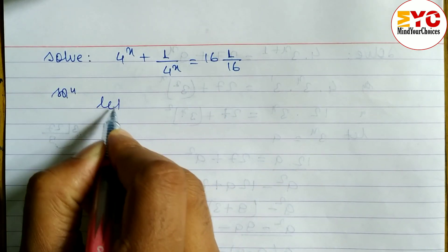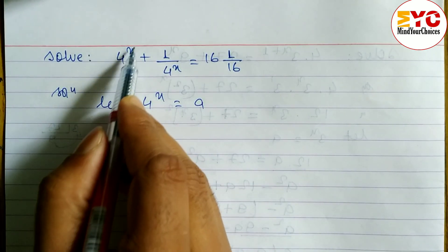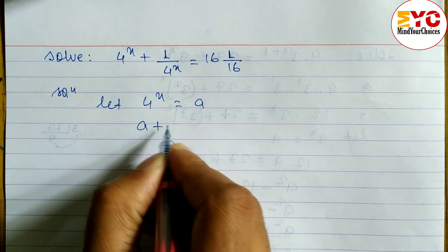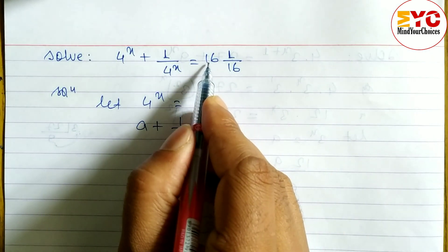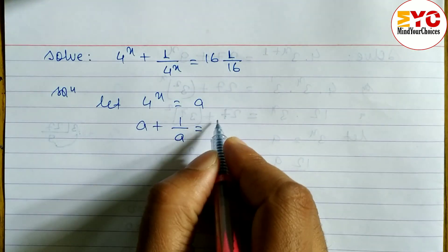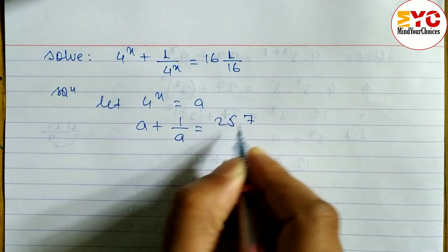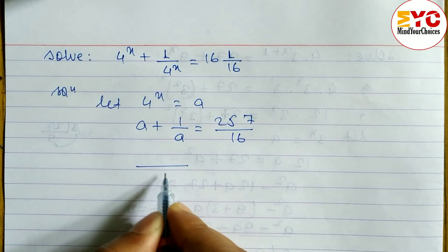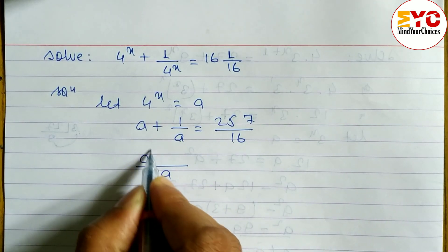First of all, let 4^x equal to a. So in place of 4^x we write a. The equation becomes: a + 1/a = 16 + 1/16. Now 16 + 1/16 gives us 256/16 + 1/16, which equals 257/16.